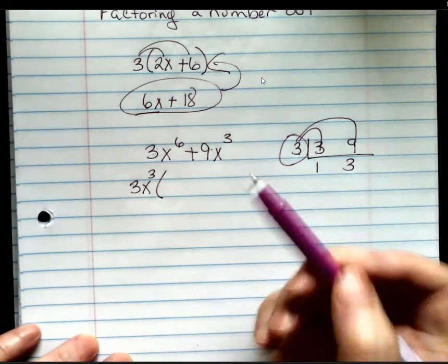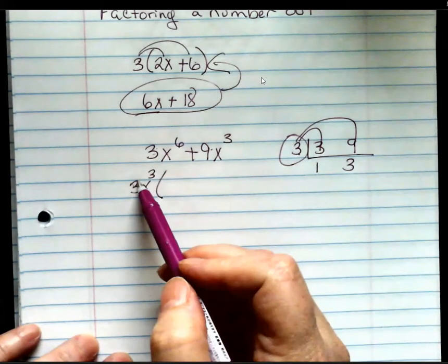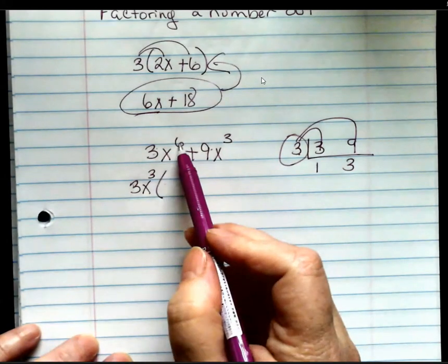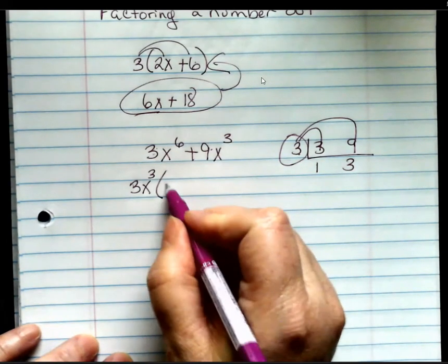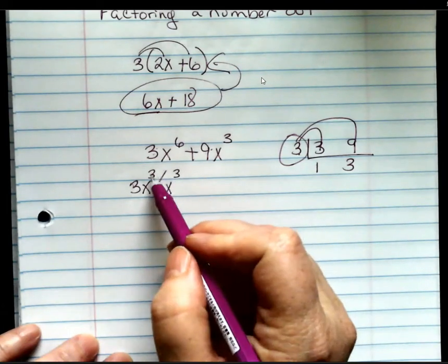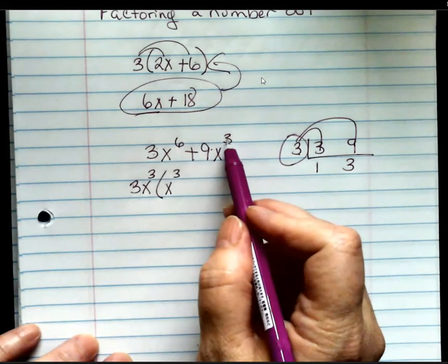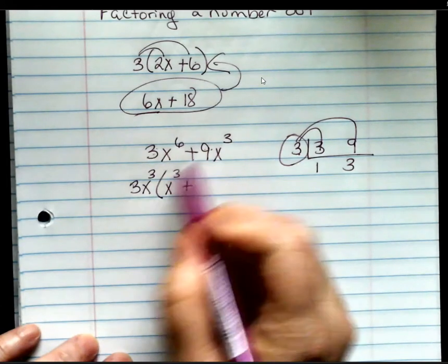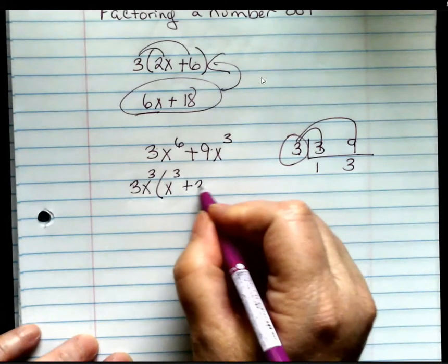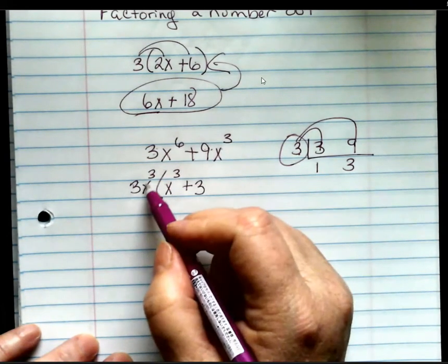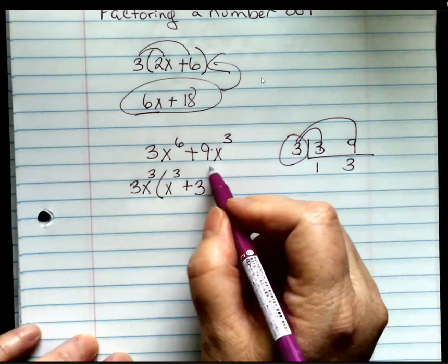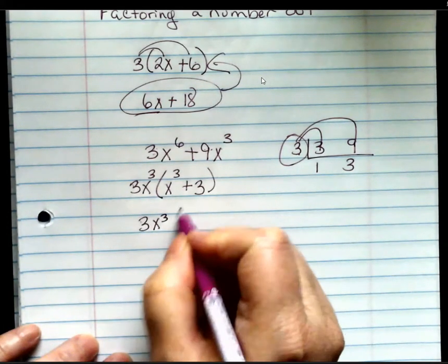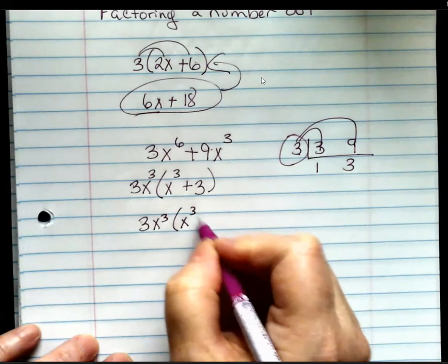Now, it's kind of like division. What's 3 divided by 3? 1. I don't need to write that. Dividing, what's 6 minus 3? 3. See, if I would have had a 6 there, I couldn't have taken that out of the 3. Now, what's 9 divided by 3? 3. And then the x cubed divided by x cubed makes 1. So then my answer is 3x cubed times x cubed plus 3.